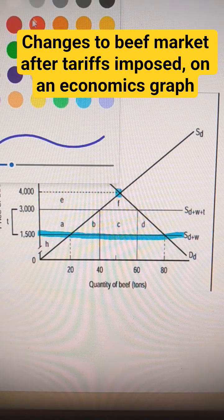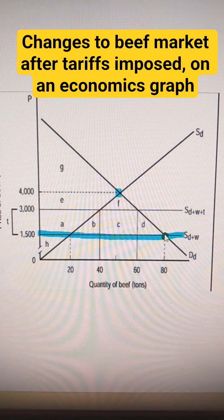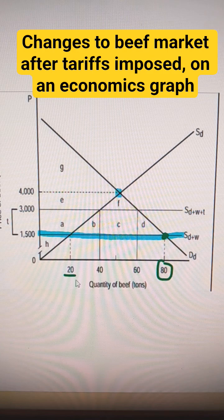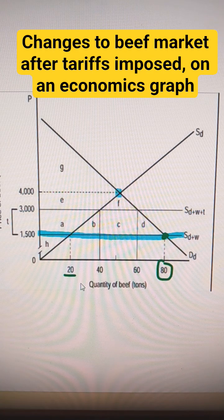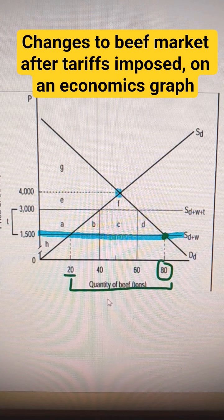So before, without a tariff, I follow this out to where it hits the demand curve. They would purchase a total of 80,000, but 20,000 would come domestically, so the difference would be 60,000. So initially, the import amount is 60,000.